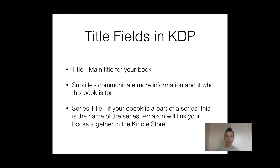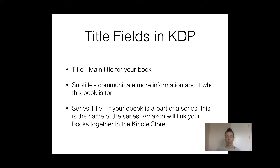There are three different title fields that you can input information to when you publish your book in KDP. First of all, there is the title, which is the main title for your book. There's the subtitle, which communicates more information about who this book is for, really helping readers decide whether or not your book is something they want to buy. And then the series title, which is there if your e-book is part of a series.